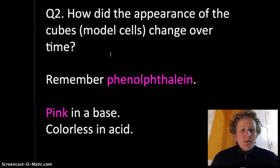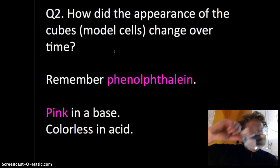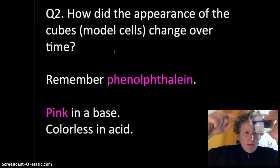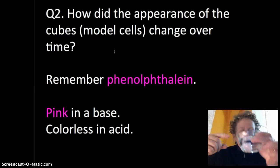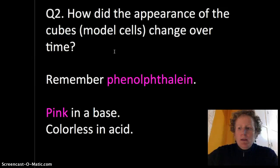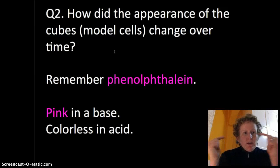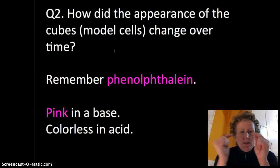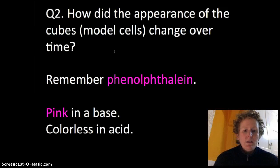The appearance of the cubes, the model cells, are going to change over time. Remember phenolphthalein from an earlier lab? That's the pink stuff inside these cubes. It's pink in base and colorless in acid and you're going to see that the outside of the cubes are getting very white because the vinegar, the acid, starts to diffuse into the agar cubes and they're going to turn colorless.